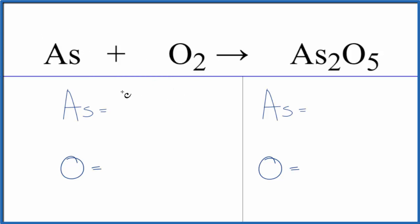So the first thing we need to do is count the atoms up on each side of the equation. We have one arsenic atom and two oxygen atoms. And then on the product side, we have two arsenic atoms and five oxygen atoms.